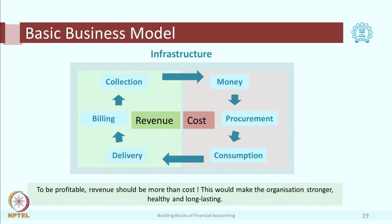It starts with money procurement and so on, and goes back to money. At the stage of procurement and consumption the costs are incurred, then delivery and collection is the time you get the revenue.